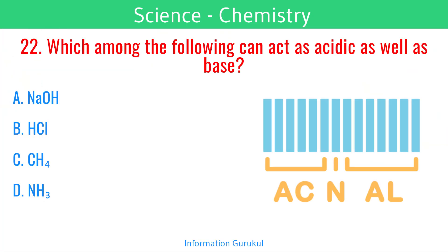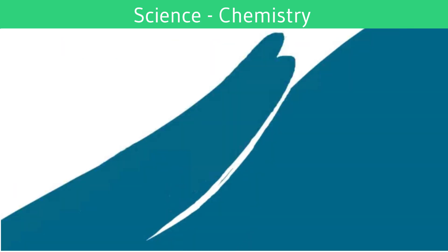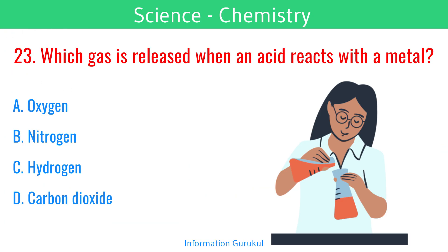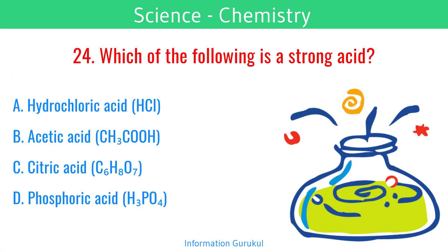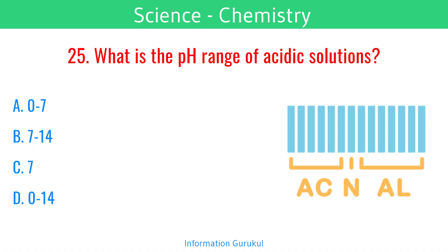Which among the following can act as acidic as well as base? Ammonia. Which gas is released when an acid reacts with a metal? Hydrogen. Which of the following is a strong acid? Hydrochloric acid. What is the pH range of acidic solutions? 0 to 7.